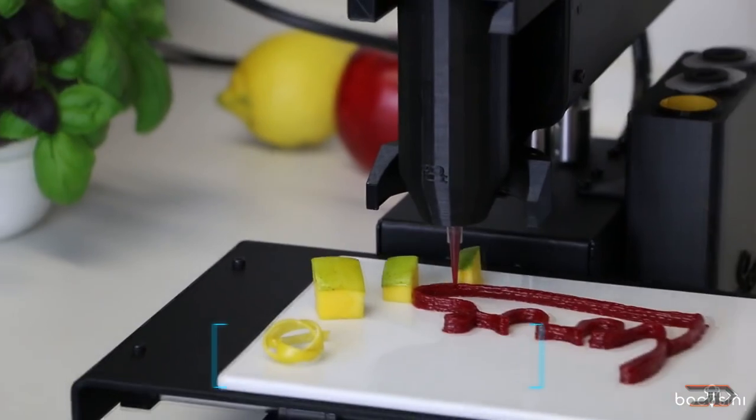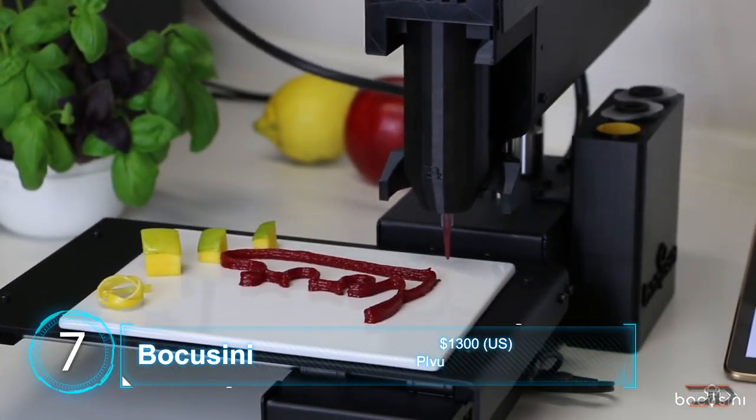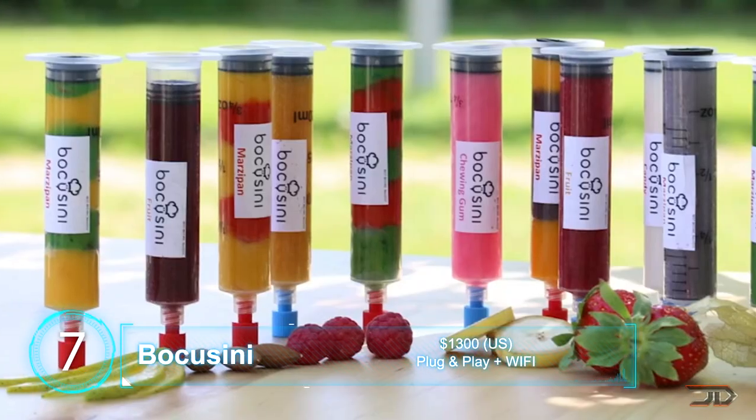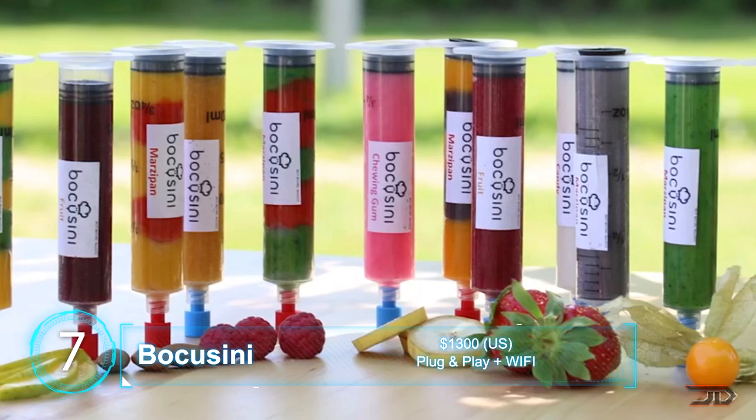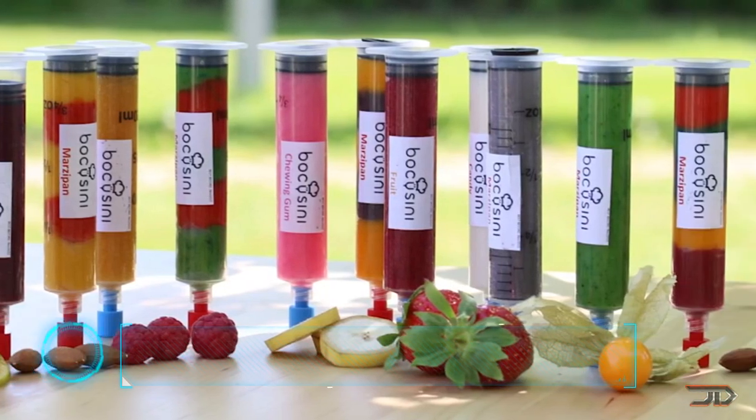Okay, so now we're gonna get into the really cool stuff and get into number 7, the Bocasini food printer. Printing only takes several minutes and it can handle bakery, dairy, meat, fruit, and even vegetable products.